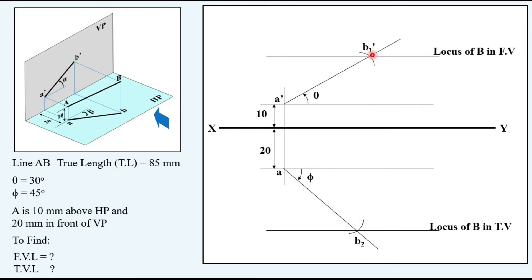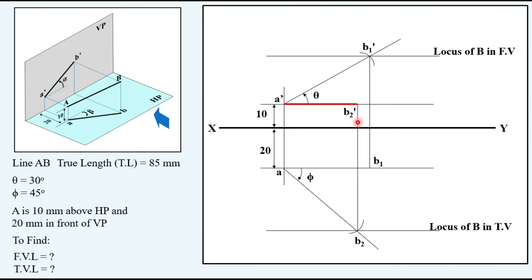Now, project point B1-dash down to the top view of A. Once projected from the front view, B1-dash moves into the top view, so the dash is removed and it becomes B1. Similarly, project B2 up to the front view point A-dash. When bringing B2 into the front view, it takes a dash — becoming B2-dash. Then A-dash B2-dash is the required front view, and A B1 is the required top view. The lengths are correct but the positions are wrong, because we need B-dash on the locus line and B on the corresponding locus line.